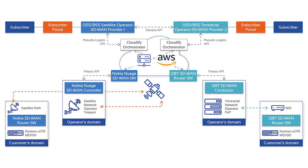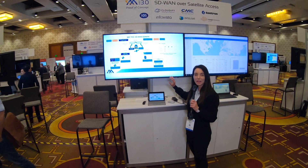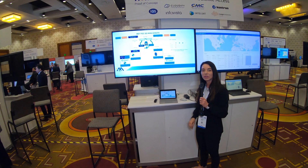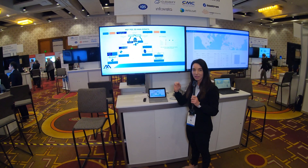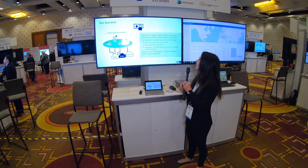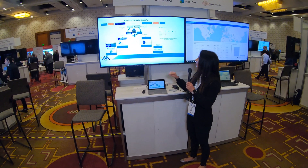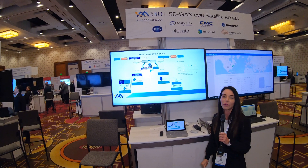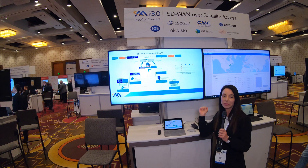Once that confirmation is received, it would give an instruction to the Cloudify orchestrator to instantiate through Nokia Nuage an SD-WAN connection to the B-end. We've brought in the MEF specifications — using MEF 70 to delineate and demarcate traffic types and application flows to provide policy-based routing. We're also using Presto for the instruction between the orchestrator and the SD-WAN controller, and Sonata to provide the instruction between the business application layers.